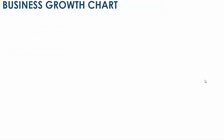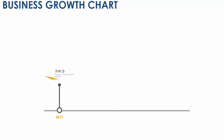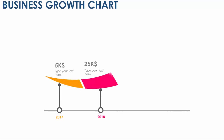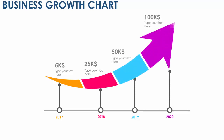In this tutorial I'm going to show you a business growth chart with the help of an arrow. When I click it will show 2017, then 2018, 2019, and then 2020. It gives you a very good slide for your presentation to show the progress of the company, where it started in 2017 with $5,000 and in 2020 it's $100,000.